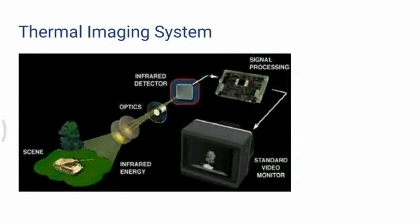The signal processing unit sends the information to the display where it appears as various colors depending on the intensity of the infrared emission. The combination of all the impulses from all of the elements creates the image.